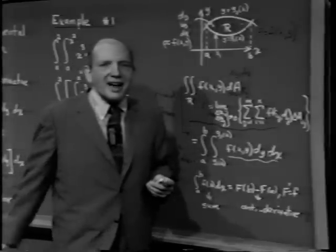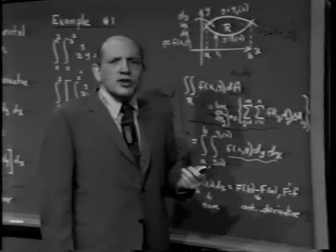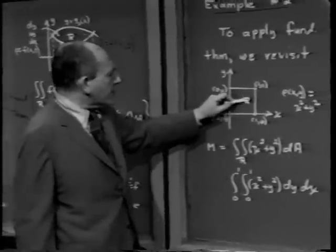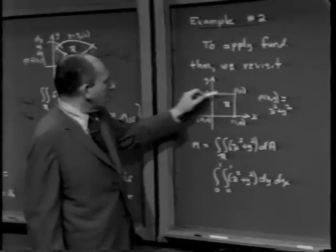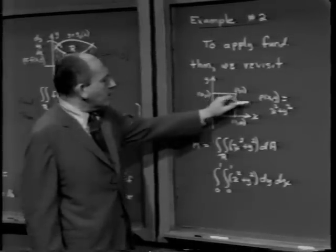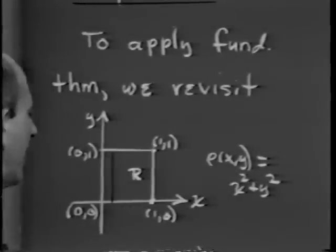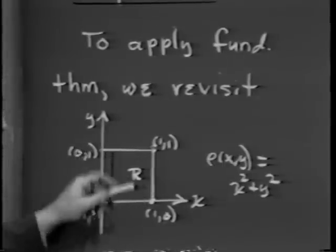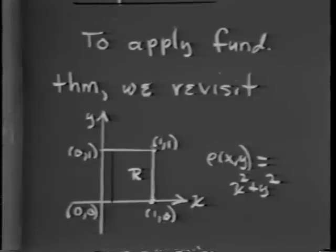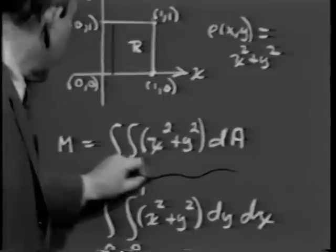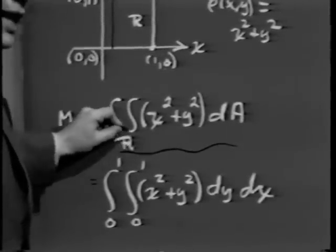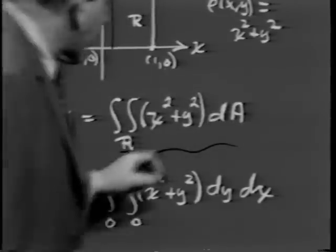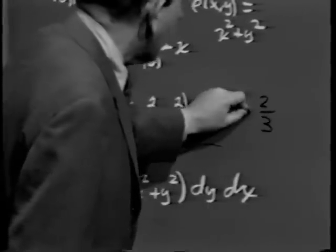The best way to emphasize that is to repeat the punchline from the homework exercises. Last time we were dealing with the square whose vertices were (0,0), (1,0), (1,1), and (0,1). The density of the square at the point (x,y) was x² + y². I asked you to compute the mass of this plate R exactly. By definition, this mass was the double integral over R — a limit of a double sum — and last time we showed, in terms of double sums, that this came out to be ⅔.